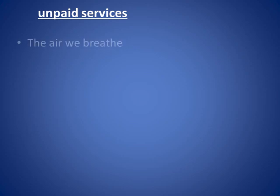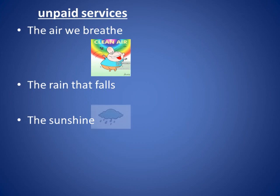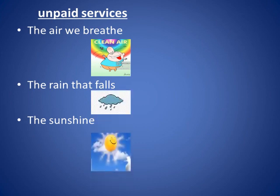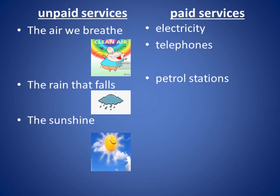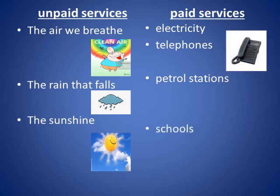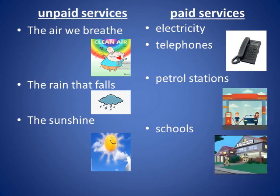Some services like the air we breathe, the rain that falls, and the sunshine that brightens the day are provided to us by nature. We don't have to pay for them — they are free of cost, so they are called unpaid services. But there are some services we have to pay for, like electricity and telephones — every month we pay electricity and telephone bills — as well as petrol stations and schools. These are called paid services.